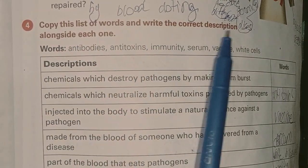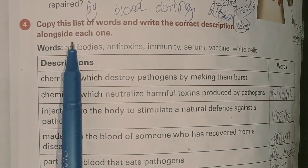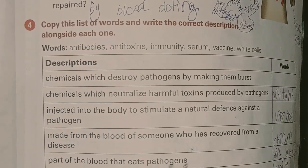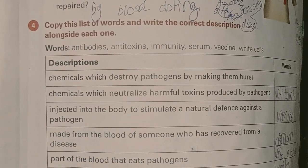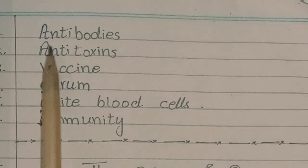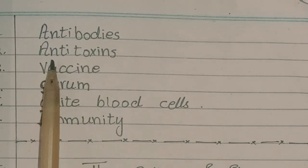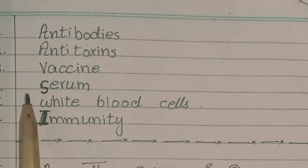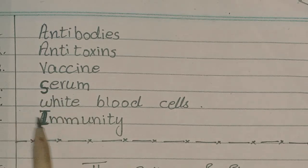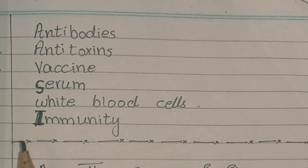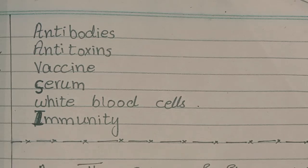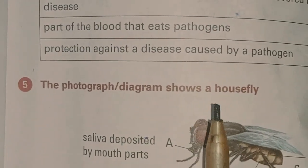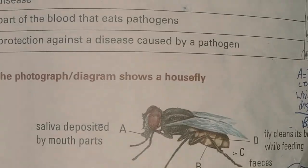Question number four: copy this list of words and write the correct descriptions alongside each one. First: antibodies. Second: antitoxin. Third: vaccine. Fourth: serum. Fifth: white blood cells. Sixth: immunity.